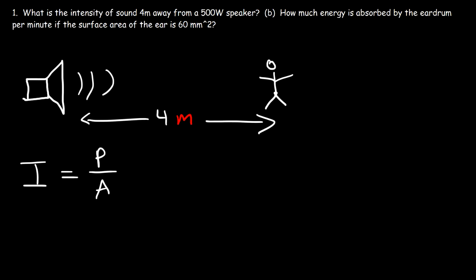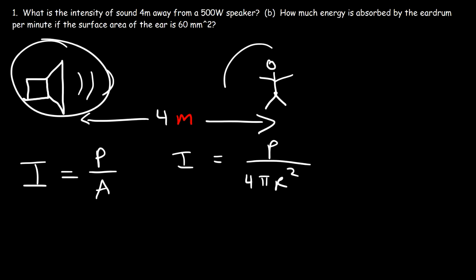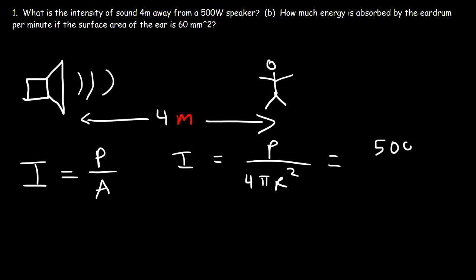Since sound travels in all directions, it emanates in the shape of a sphere, so we need to use the surface area of a sphere and not the area of a circle. The intensity is defined as power divided by 4πr², where r is the distance between the source and a point of interest. In this example, r is 4 meters.